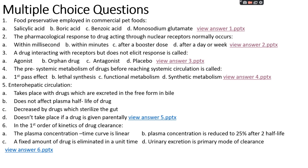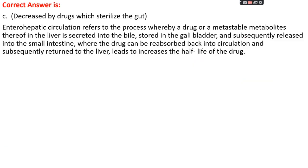Question number five: enterohepatic circulation — option A: takes place with drugs excreted in free form in bile, option B: does not affect plasma half-life of drug, option C: is decreased by drugs which sterilize the gut, or option D: does not take place if a drug is given parenterally. The right answer is option C, decreased by drugs which sterilize the gut.